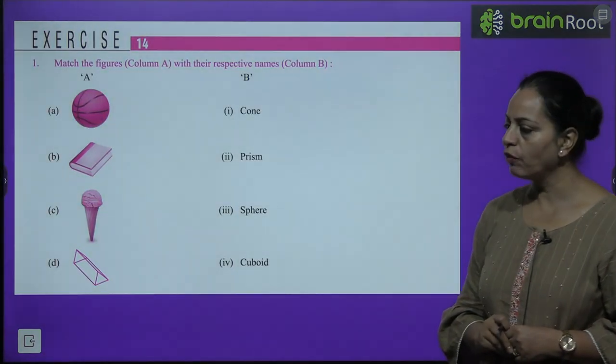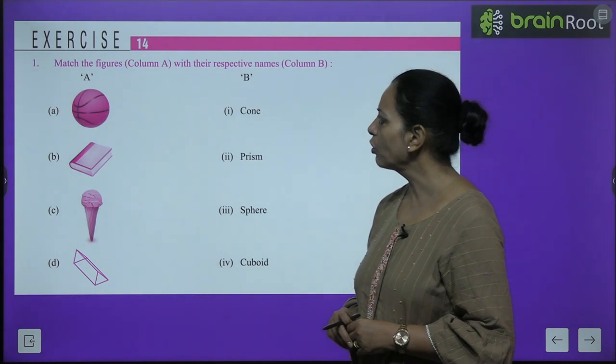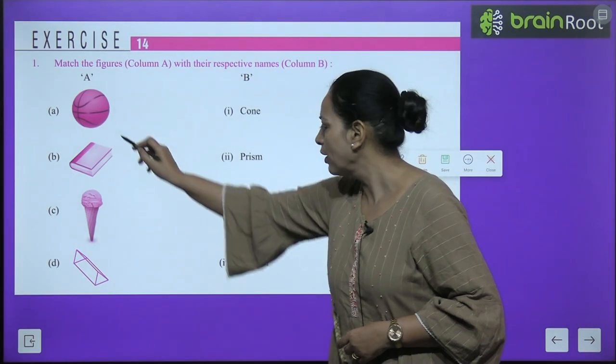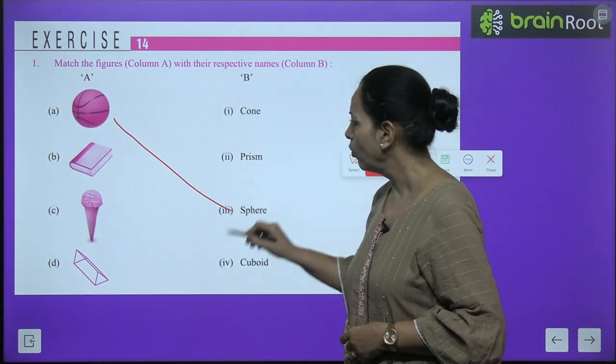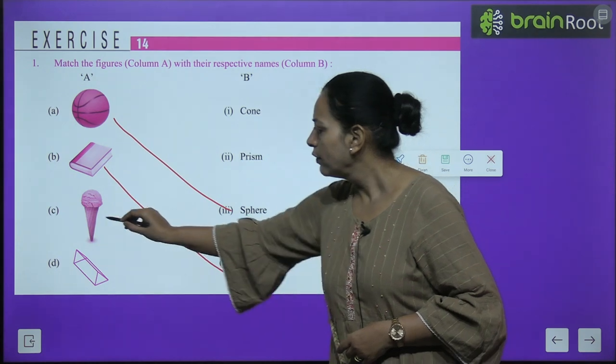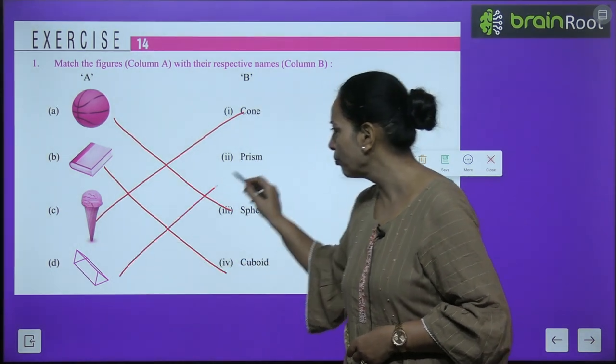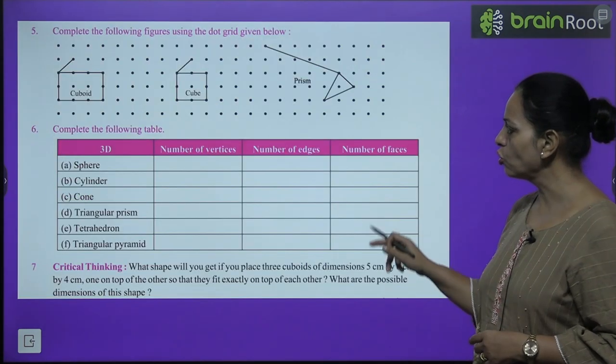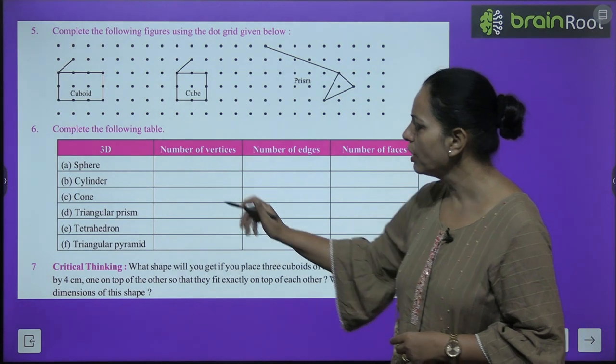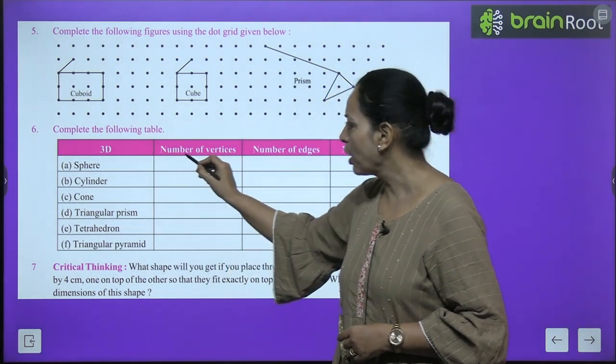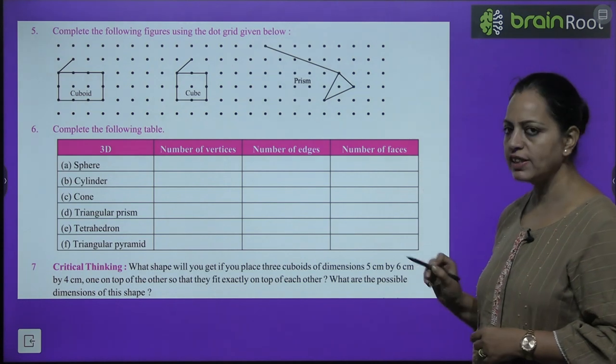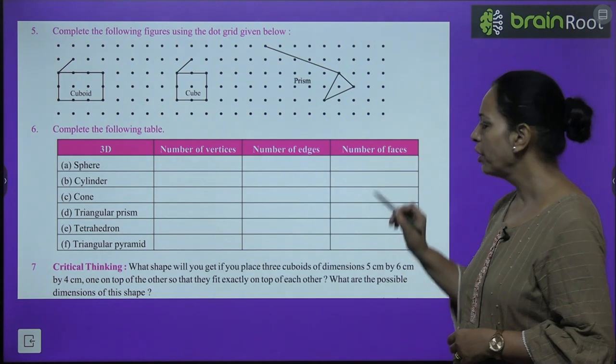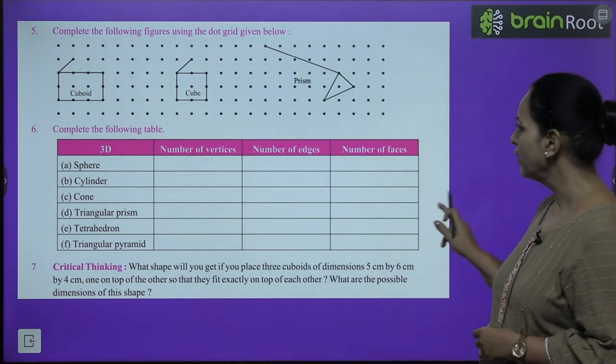Exercise 14 is given. The first one: Match the figures in column A with the respective names in column B. Part A is a sphere, this is a cuboid, this is an ice cream cone, and this is a prism. Very easy - you can try these. Similarly, you can go through these questions. Question 6: Complete this table. 3D shapes, number of vertices, number of edges, and number of faces are given. For example, sphere has how many vertices? No vertices. No edges. Number of faces: 1. Like this, you can try these questions.